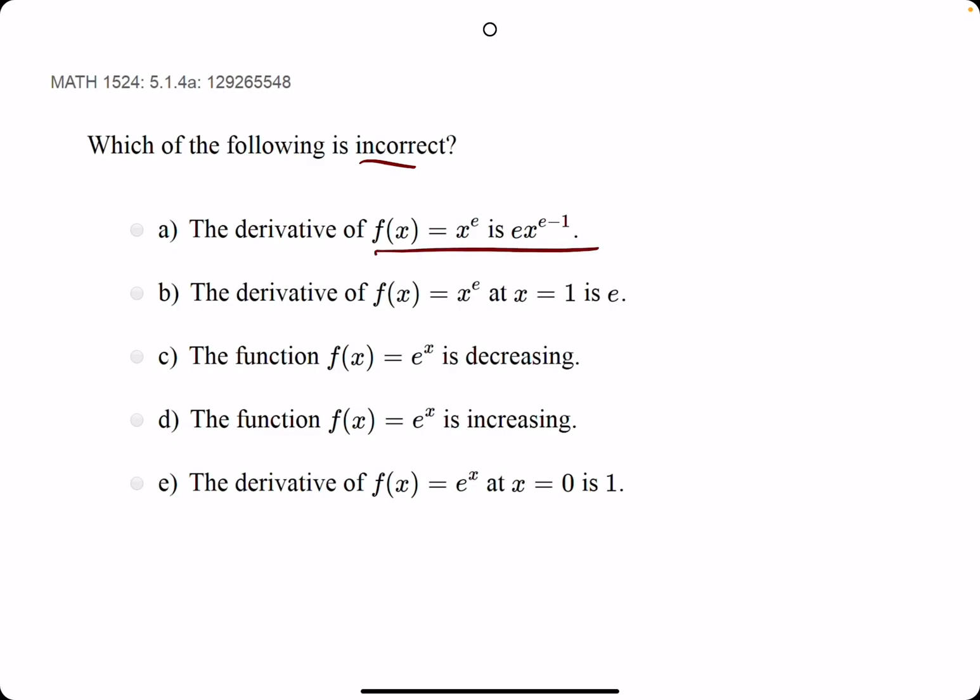They say the derivative of x to the e is e times x to the e minus one. Well, if we're taking a derivative of x raised to some number, e is just a number, we bring that number out in front and then we subtract one from the exponent. So the result is e x to the e minus one. So this checks out. It is correct. So we cancel it out.